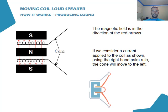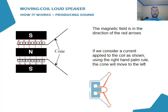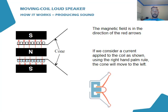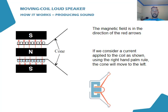Now if the current is flowing in the opposite direction — a negative current applied — we have dots at the top instead of crosses, meaning the current is going out of the page. That means the force is going to the left, creating a rarefaction as the cone is pulled back. In the previous example it was a compression. Alternating these at a certain frequency is what produces our sound.